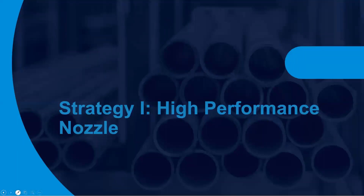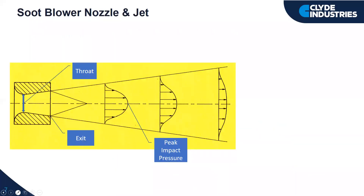Let's get to the first strategy, which is about the high performance nozzles. What you see here is an illustration of a soot blower nozzle. It has a converging section and a diverging section, also known as the de Laval nozzle. High pressure steam on the left of this image is accelerated through this nozzle until it reaches what's known as the throat, or the narrowest point.